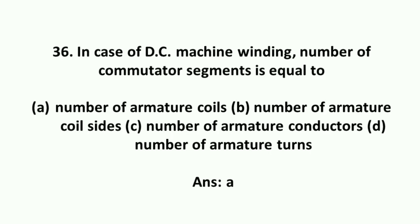In case of DC machine winding, number of commutator segments is equal to the number of armature coils.